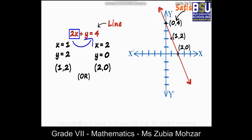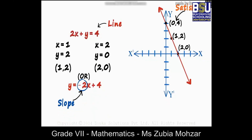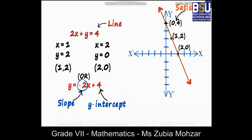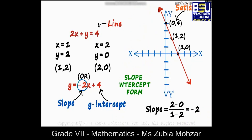There is an interesting way to write this equation: we can transpose 2x to the other side and write it as y equals minus 2x plus 4. Writing the equation this way gives us two important things: the slope, which is minus 2, and the y-intercept, which is 4 — the point at which the line intersects the y-axis. We can verify the slope using (y2 minus y1) over (x2 minus x1): (2 minus 0) over (1 minus 2) gives minus 2. This is called the slope-intercept form.